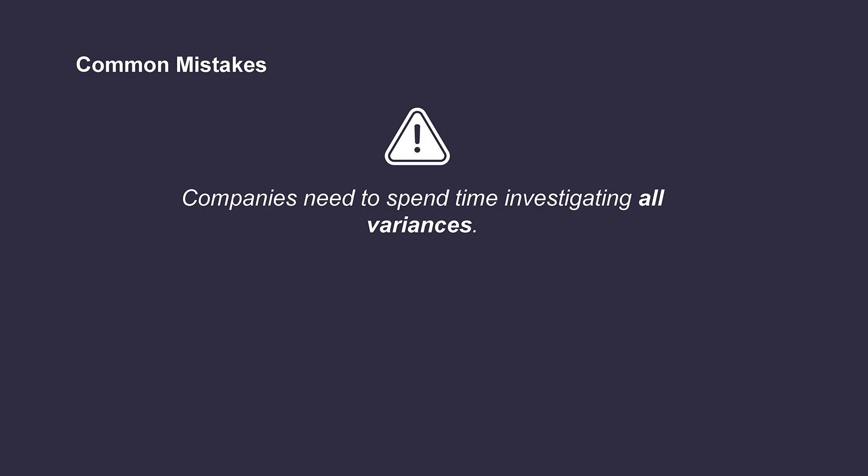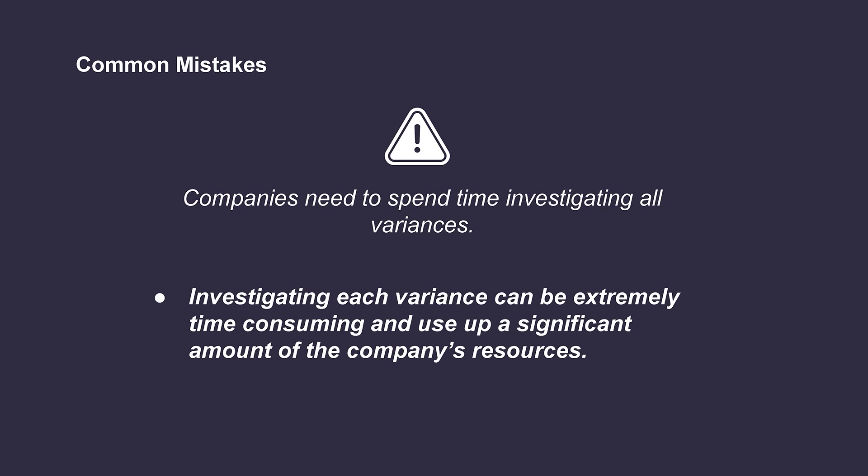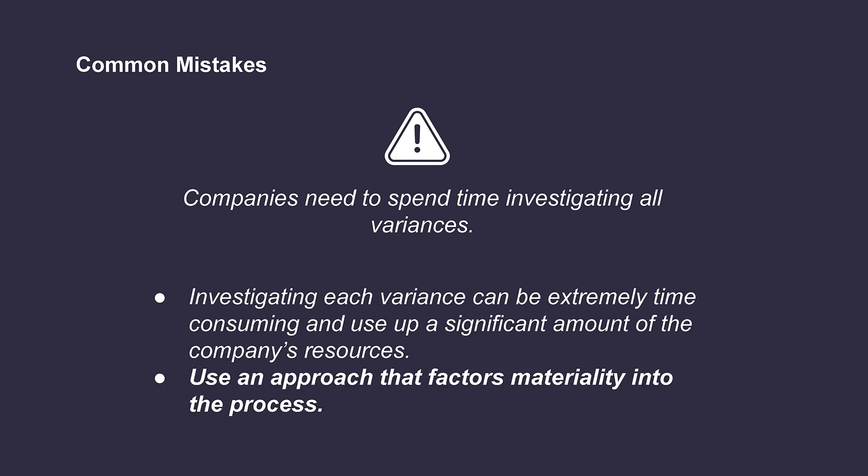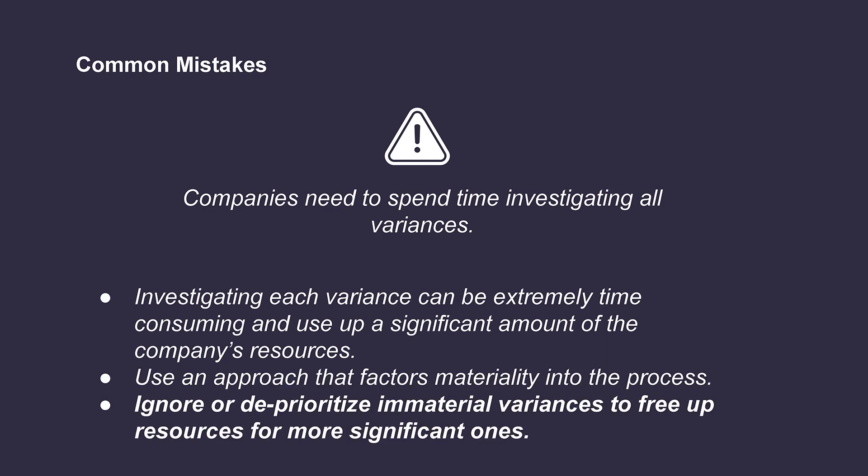It's a common misconception that companies need to spend time investigating all variances. While it would be nice to understand why each actual result differed from the budgeted value, investigating each variance can be extremely time-consuming and use up a significant amount of the company's resources. As a result, they'll generally want to come up with an approach that factors in the concept of materiality into the process. Variances that are immaterial or insignificant to the company's operations can likely be deprioritized, which frees up resources to spend time investigating more significant variances. Companies do this by coming up with a certain dollar value or percentage threshold — for example, they may choose to only investigate unfavorable variances of $1,000 or more, or variances that are 25% or greater than the budgeted value.